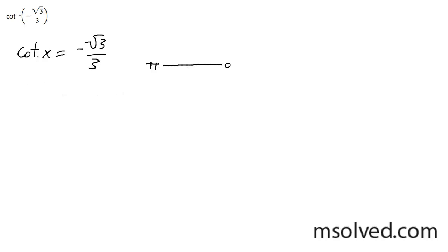And what you can do here, if it helps, so cotangent, normally tangent is y over x, and cotangent is x over y, in this case negative root 3 over 3.